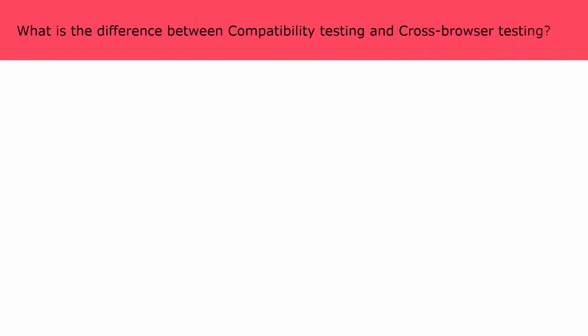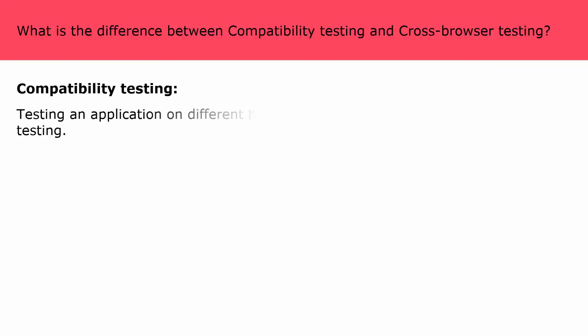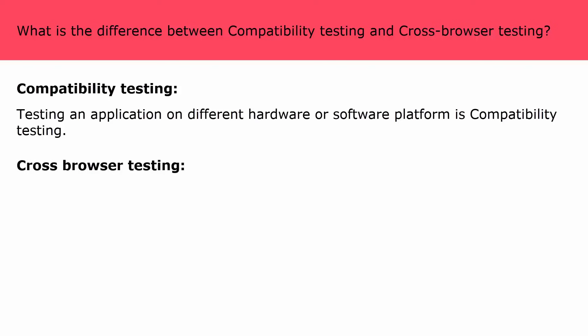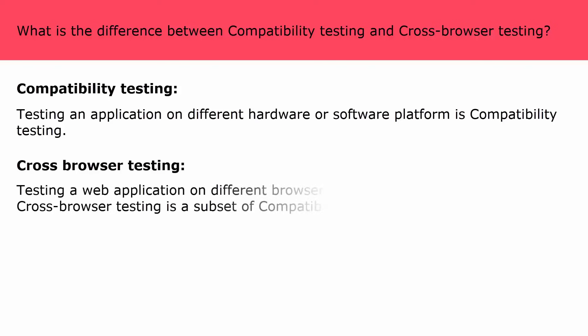What is the difference between compatibility testing and cross browser testing? Compatibility testing is testing an application on different hardware or software platforms, for example different devices such as iPhone, Samsung, etc., or different operating systems such as Windows, Linux, etc. Cross browser testing is testing a web application on different browsers such as Google Chrome, IE 10, IE 11, etc. Cross browser testing is a subset of compatibility testing.